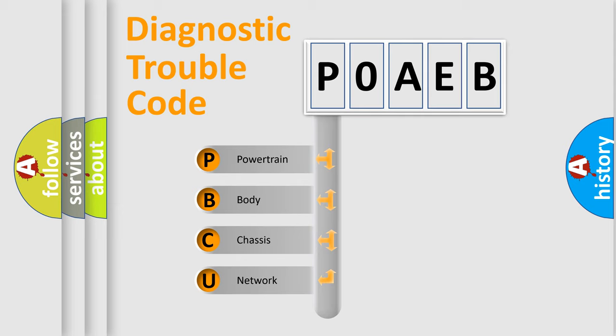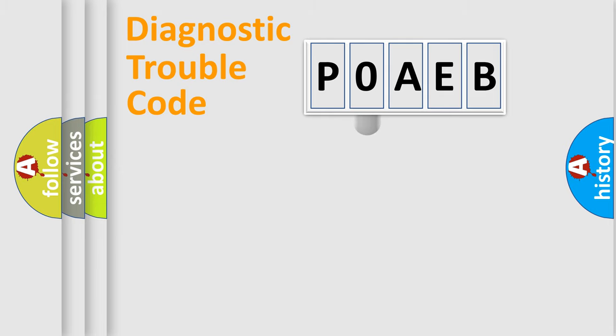We divide the electric system of automobile into four basic units: Powertrain, Body, Chassis, and Network. This distribution is defined in the first character code.